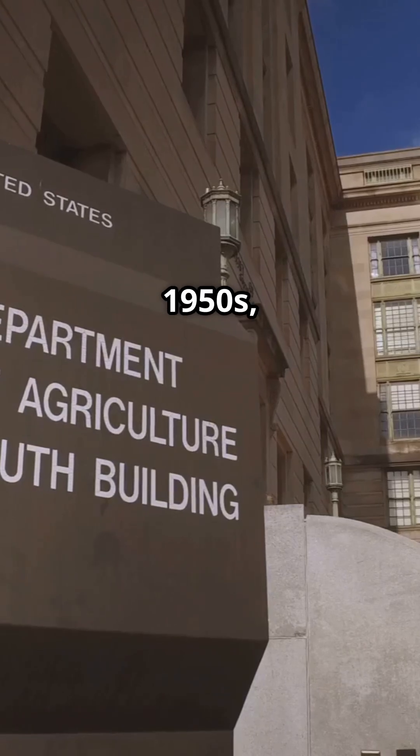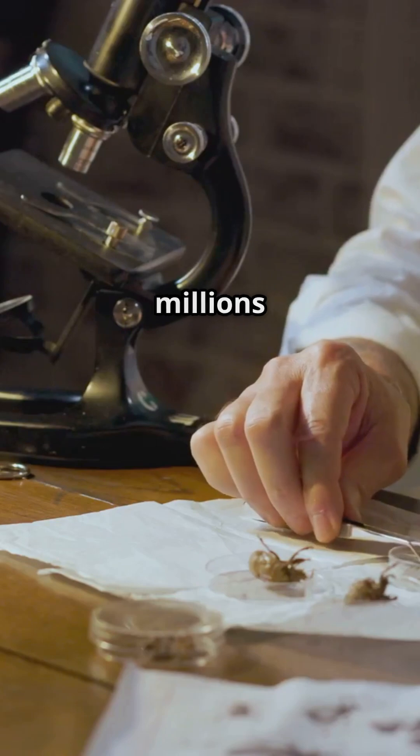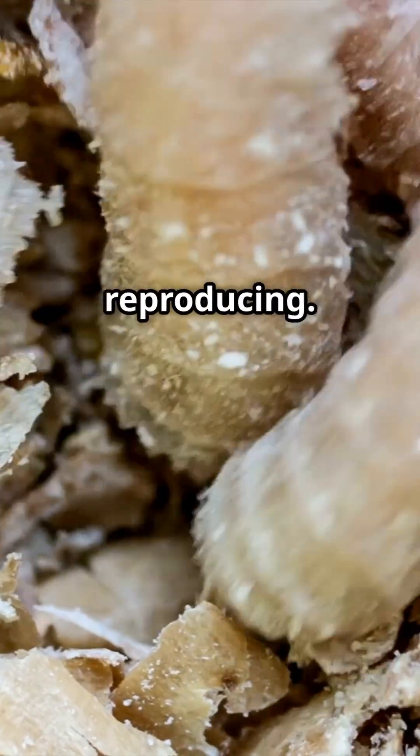But in the 1950s, the USDA launched the Sterile Insect Technique. The idea? Release millions of sterilized screwworms to mate with wild ones, stopping them from reproducing.